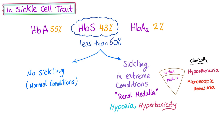In sickle cell trait, 55% of the hemoglobin is hemoglobin A, 43% is hemoglobin S, and the remaining 2% is hemoglobin A2. So there are two main types of hemoglobin present, and we call this phenomenon co-dominance.